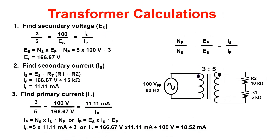To perform transformer calculations, use table 16 on your formula chart. We start by using the number of windings to find secondary voltage: five windings multiplied by 100 volts, divided by three, gives a secondary voltage of 166.67 volts. Now we solve for secondary current: 166.67 volts divided by the total resistance of 15k ohms gives 11.11 milliamps. Finally, for primary current: five turns times 11.11 milliamps divided by three turns gives 18.52 milliamps through the primary.